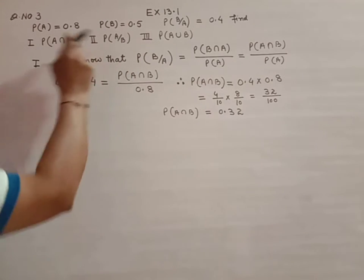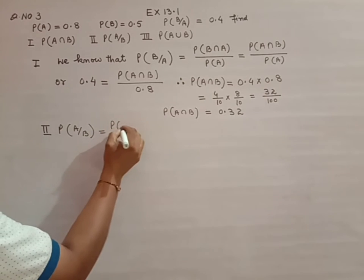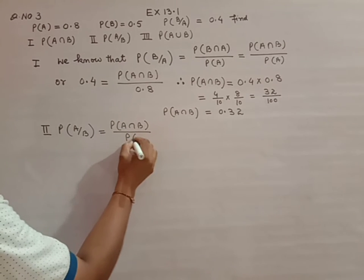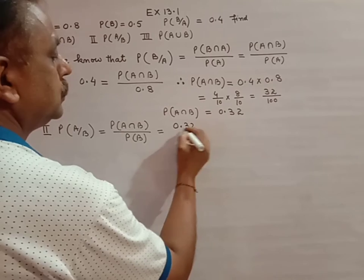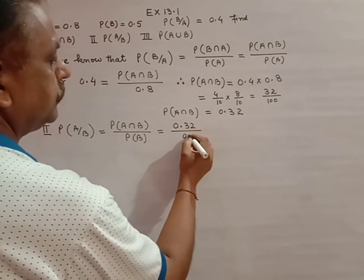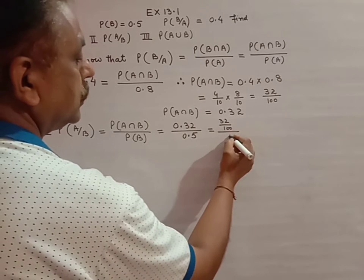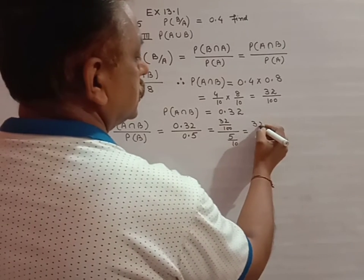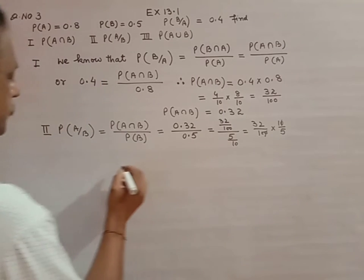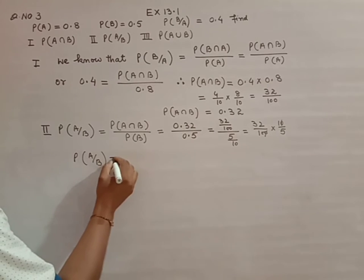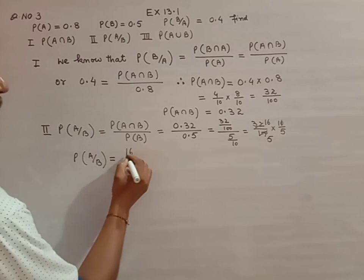That is the first part done. Now for the second part, P(A|B) equals P(A intersection B) divided by P(B), which is 0.32 divided by 0.5, that is 32/100 divided by 5/10, equal to 32/100 multiplied by 10/5. Simplifying, 2s are 32 and 5, 2s are 10, giving 16 upon 5 into 5.